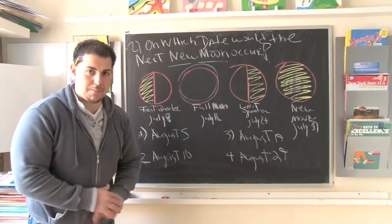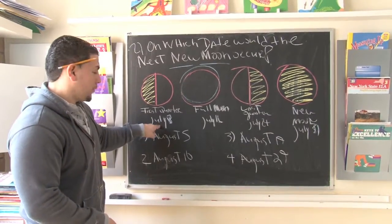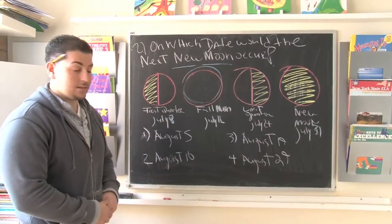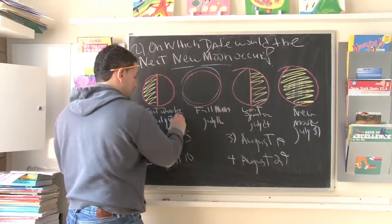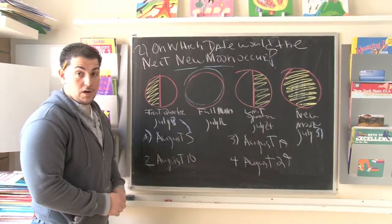Well, let's say you don't know anything about science, but you do know something about sequence. July 8th would correspond to which date in August? Well, it would correspond to August 5th. So right there, you know the first quarter in August would be August 5th.